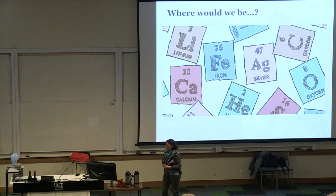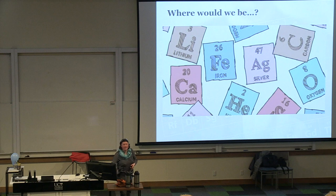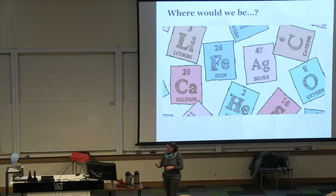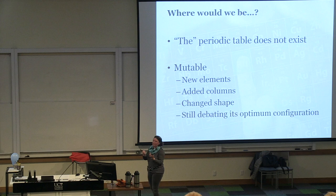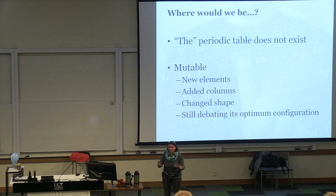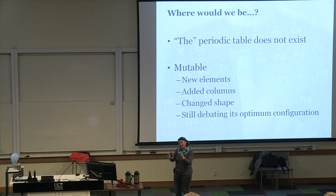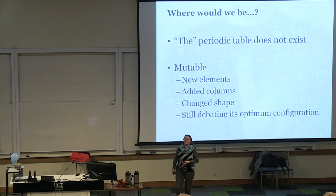The title of this lecture is 'Where Would We Be Without The Periodic Table?' We may well just be in a big jumbled mess. What I'm going to contest is that 'THE' periodic table — in inverted commas — doesn't actually exist. The periodic system we have today doesn't really look the same as the system Mendeleev came up with. We can see similarities and trends, but it's very mutable — there are always things changing. We get new elements, we've added columns, it's changed shape, and there's still a lot of debate around its optimum configuration.